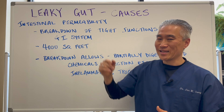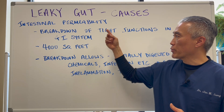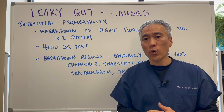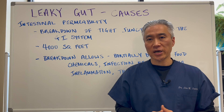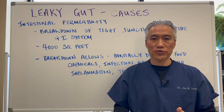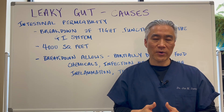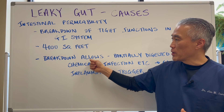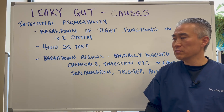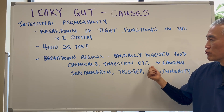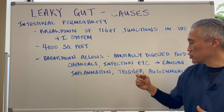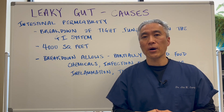Leaky gut is also known as intestinal permeability. Basically, it's a breakdown of the tight junctions in the GI system. There's approximately 4,000 square feet of surface area of the GI system. There are these tight junctions that prevent things from crossing into the bloodstream or into the tissues of our body. The breakdown of this intestinal system allows partially digested food, like food protein, chemicals, and infection to cross or embed within the lining, causing inflammation and triggering, for some people, autoimmune disease.